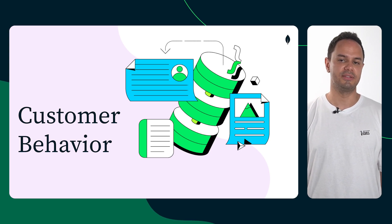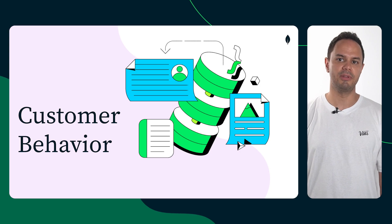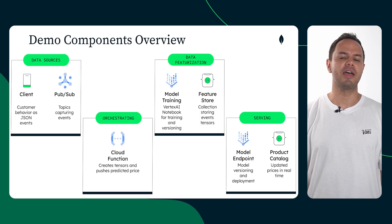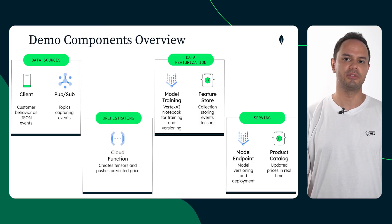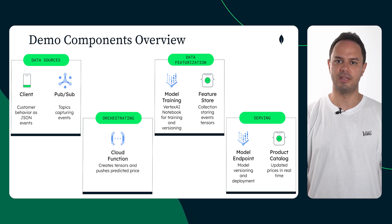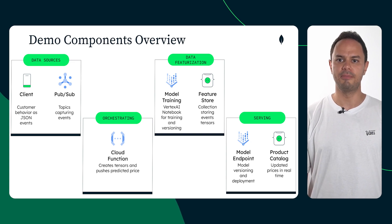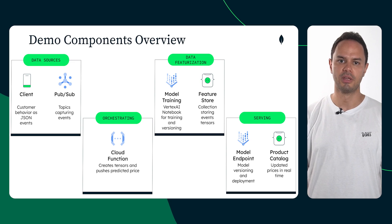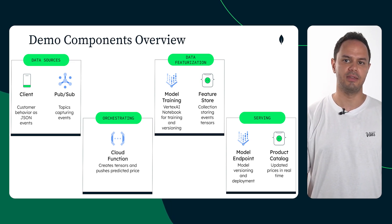In this video, we'll showcase a simplified version of customer behavior analysis by retrieving events data and building an event-driven reactive microservice for an e-commerce application. Before we jump into our live demo, let's break down the components of our dynamic pricing solution and their functions. We'll start by collecting customer events data from your applications. We'll use PubSub, a messaging service that acts as a central hub for data collection and distribution, so we can decouple our applications from the backend and build data-intensive systems.